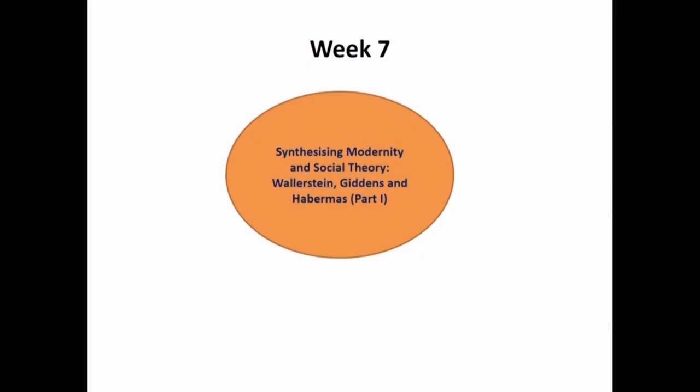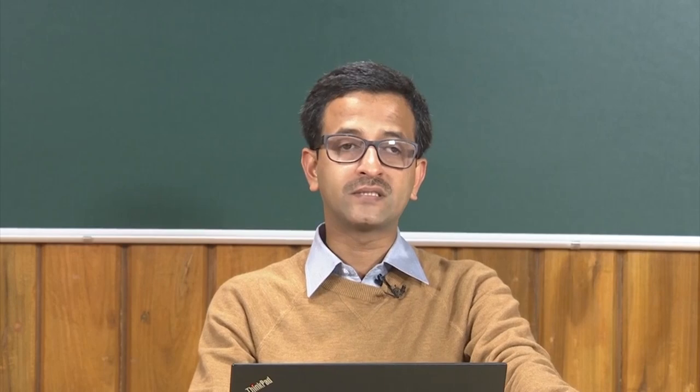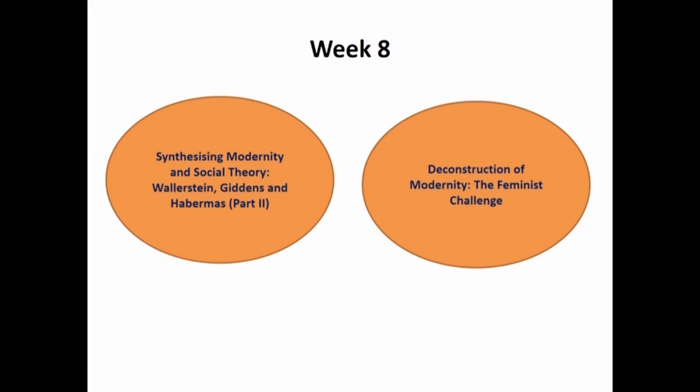In the seventh week, we discussed how to synthesize modernity and social theory — part one covering Wallerstein, Giddens, and Habermas. We examined Wallerstein's reflections on core, periphery, and semi-periphery, and the world capitalist economy; Giddens's structuration theory and consequences of modernity; and Habermas's theory of communicative action. In part two and extending into the eighth week, we further examined the similarities between Wallerstein, Giddens, and Habermas.